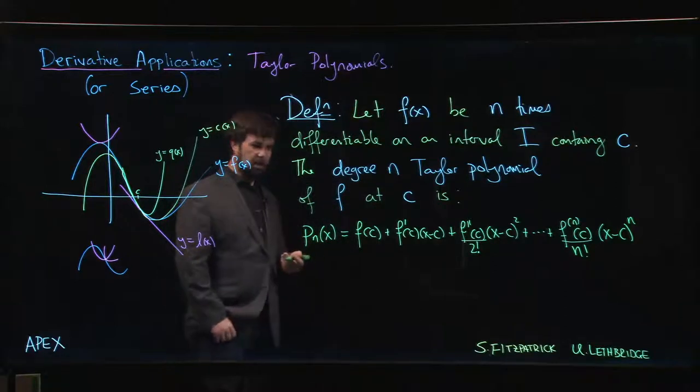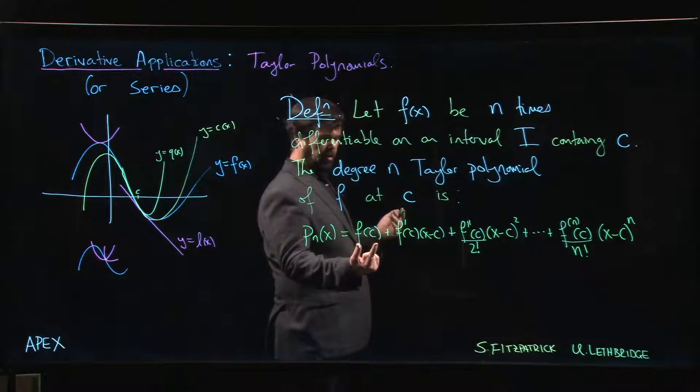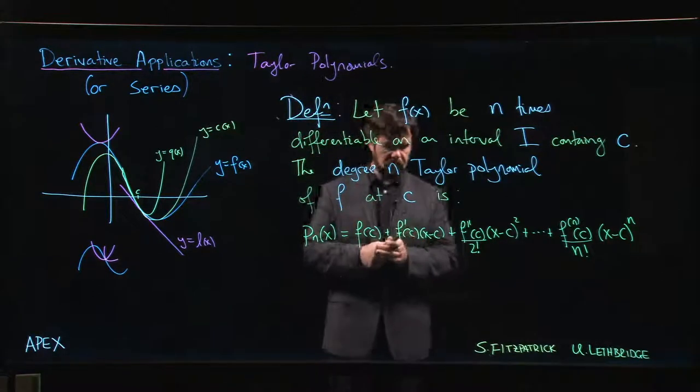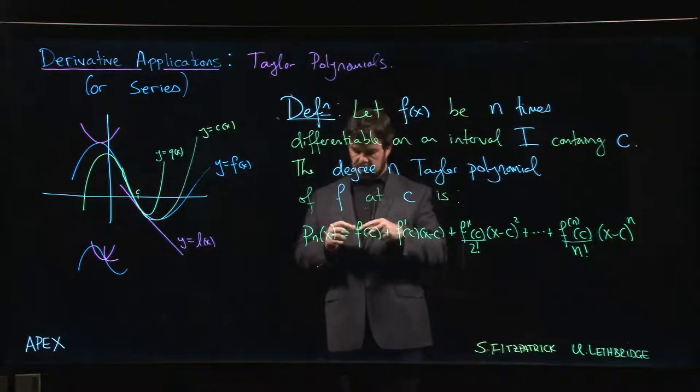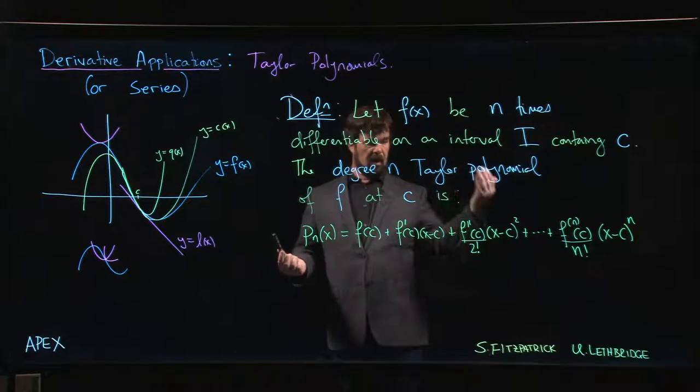The last power that you have is the degree n term. If it's degree zero, that's just a number, not very interesting. The degree one Taylor polynomial is the linear approximation. The degree two Taylor polynomial is the quadratic approximation.